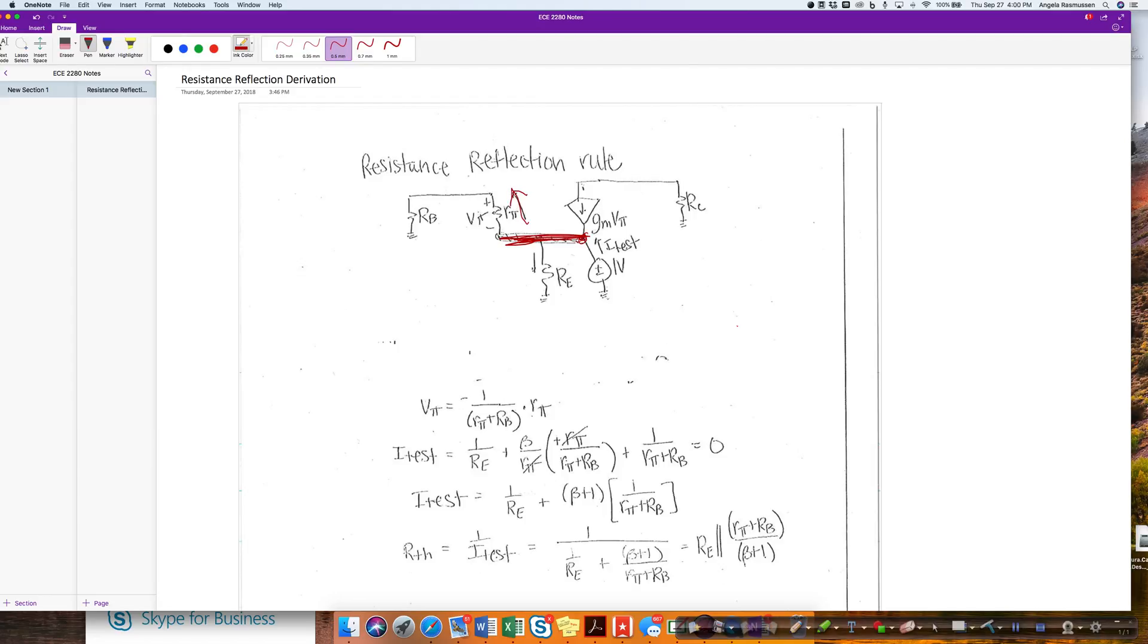I'm going to take the current flow and do a current summation. These are all of my currents. This first one is going to be the voltage, which is 1 minus 0 over Rb plus Rpi. This current flow down here is going to be the voltage here at the emitter, 1 over Re.